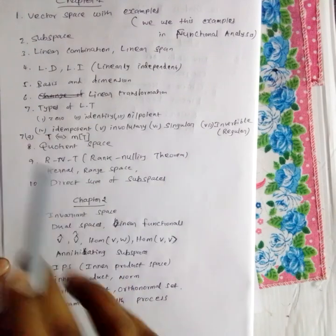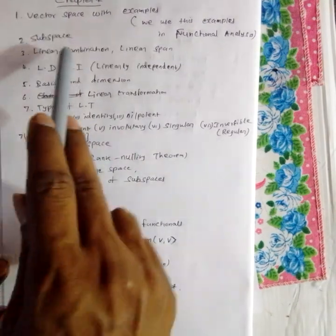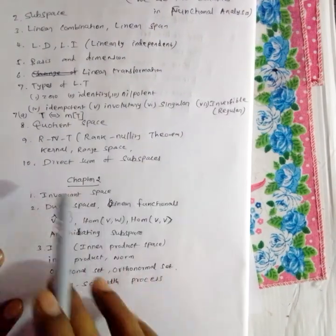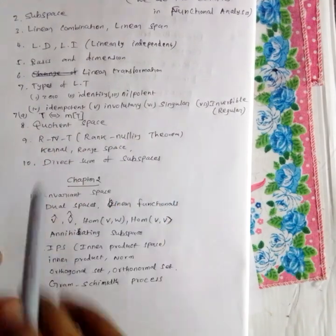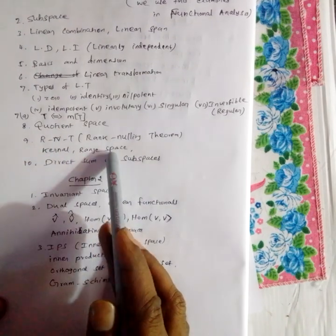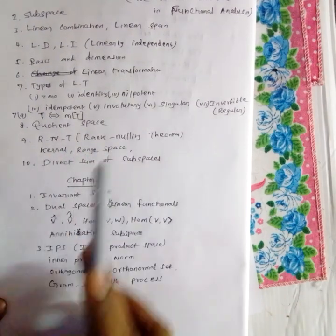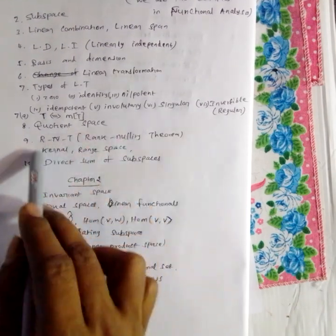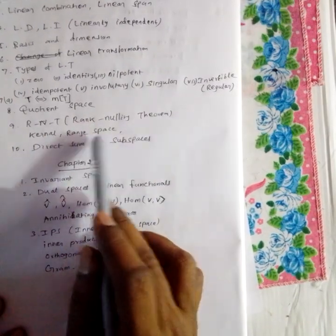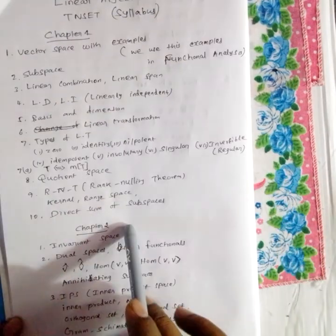If you want to make a linear transformation, you need to create a quotient space. We need to create R and T. We need to create a domain space. Direct sum of subspaces — if the sum of subspaces or intersection of subspaces, we need to create a direct sum of subspaces. This is the most important concept in the first chapter.